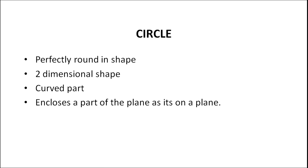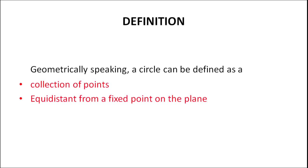How about the shape of the circular figures? They are perfectly round in shape. Second, they are two-dimensional shapes. Third, circles have a curved part. And fourth, because it's on a plane, it encloses a part of the plane. Geometrically speaking, a circle can be defined as a collection of points that are equidistant from a fixed point on the plane.